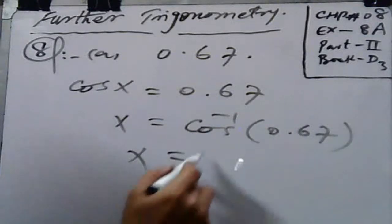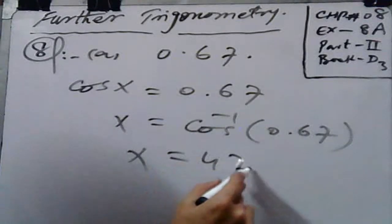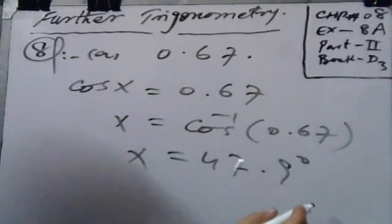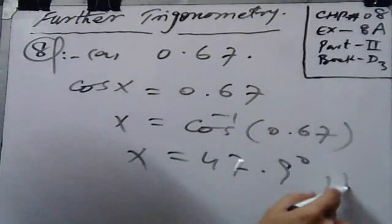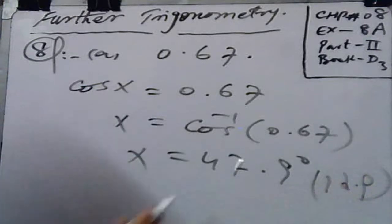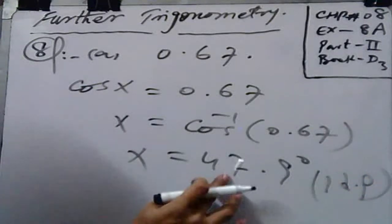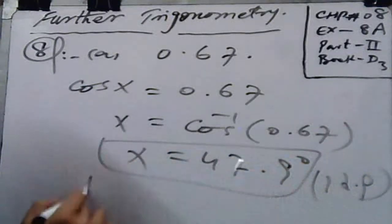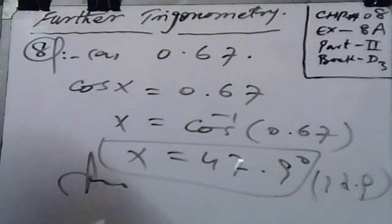With the help of a calculator you will get 47.9 degrees, up to 1 decimal place. We have to find an acute angle, and 47.9 is less than 90, so it is okay. That is your acute angle in the case of cosine.